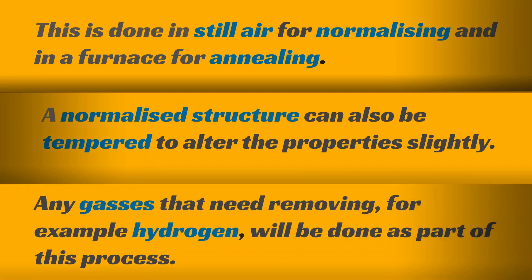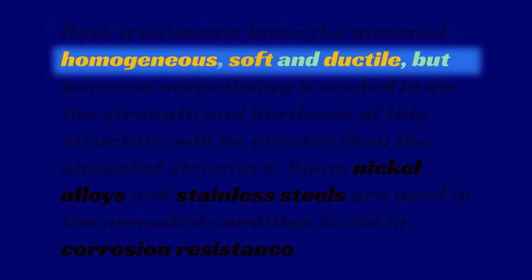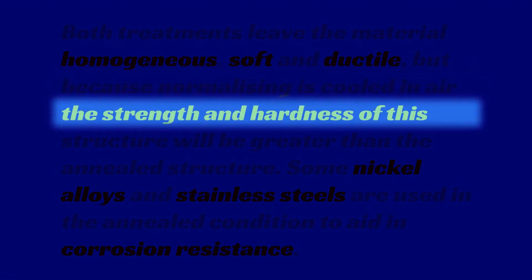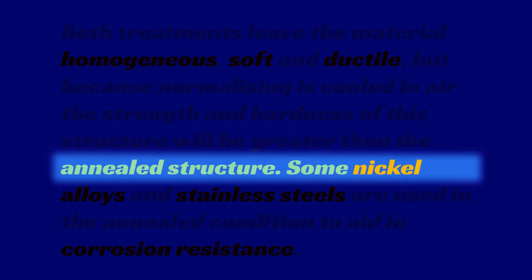Any gases that need removing, for example hydrogen, will be done as part of this process. Both treatments leave the material homogeneous, soft, and ductile. But because normalizing is cooled in air, the strength and hardness of this structure will be greater than the annealed one.